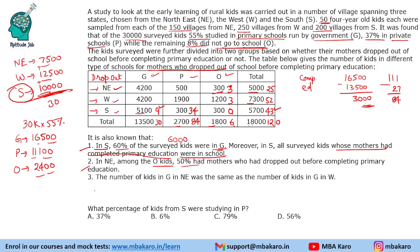The third clue says the number of kids in G in NE was the same as G in W. So G in NE equals G in W. For dropped-out mothers it is the same, so it should be the same for women who completed education. 30 is there, 9 is there, 30 minus 9 is 21, and 21 divided by 2 is 10.5 — essentially 1,050. So 10.5 here and 10.5 here also.